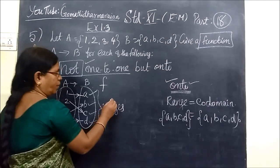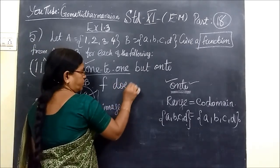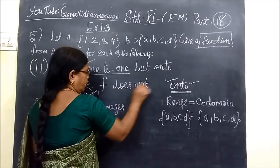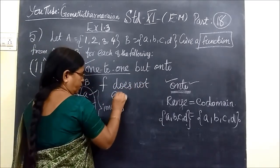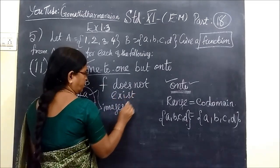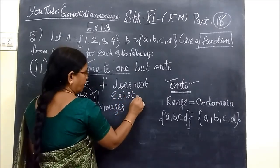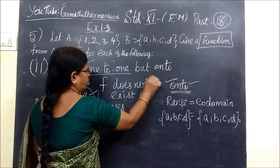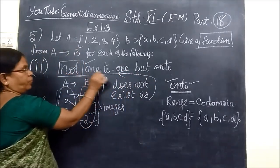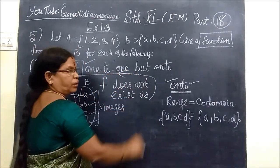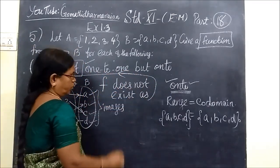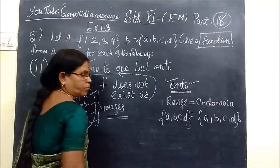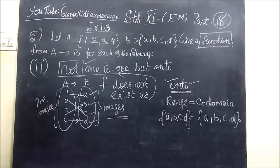So F does not exist. Here you can write: F does not exist — not one-one but onto. We can't construct such a function, and potentially you are finished.